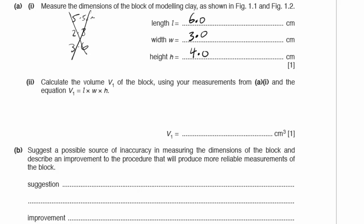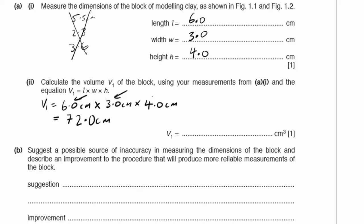Part 2: calculate the volume V1 of the block using your measurements. The equation is V1 = L × W × H. That gives a value of 72 centimetres cubed. Each dimension is two significant figures, so the answer should also be two significant figures — 72 cm³.